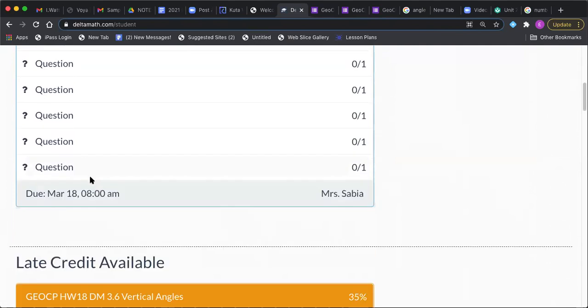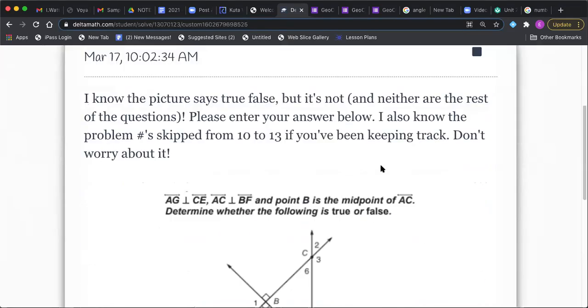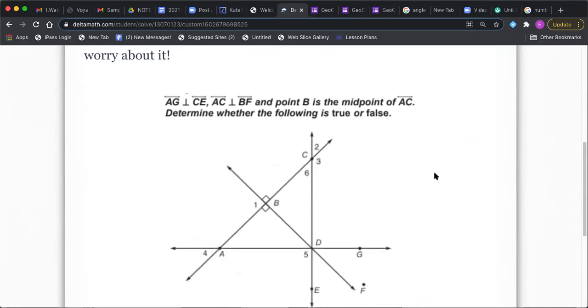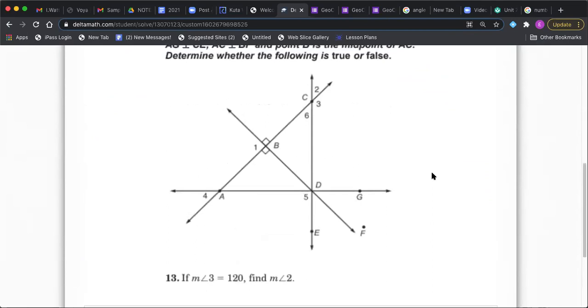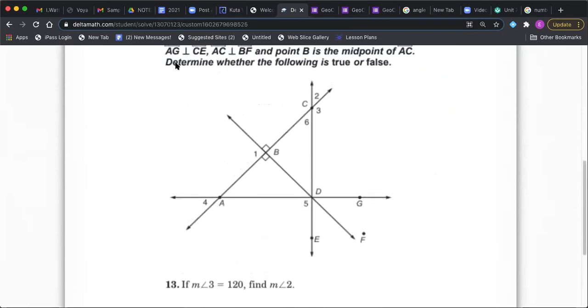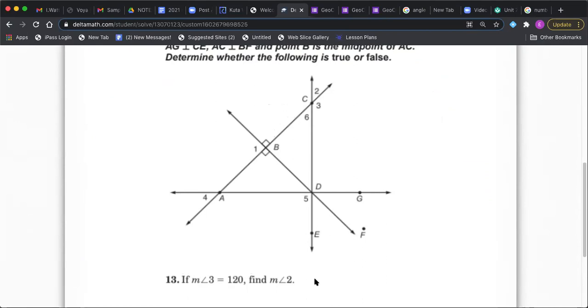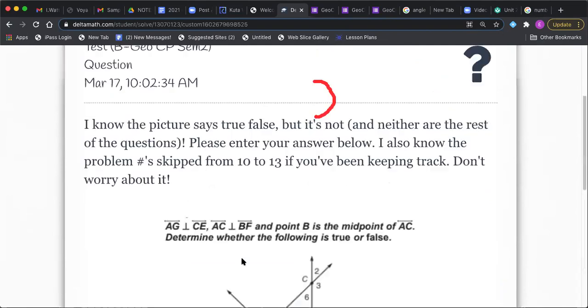And then at the very end, they're not true false questions anymore. But since I was using the same image, it's going to say determine whether the following is true or false. It's not true false. You're just going to answer the question right here. So if angle three is 120, I want you to find the measure of angle two. That's totally doable. If three is 120, you've got to find two. Here's my hint.